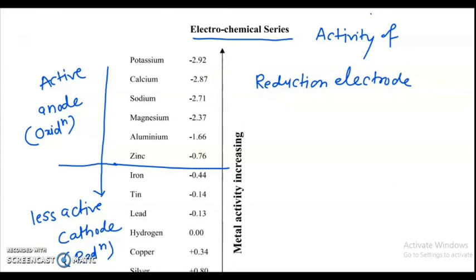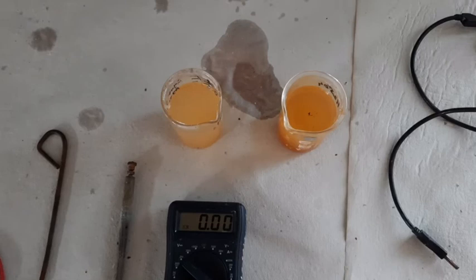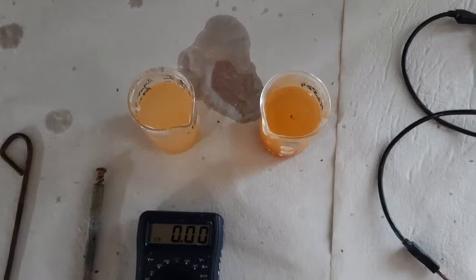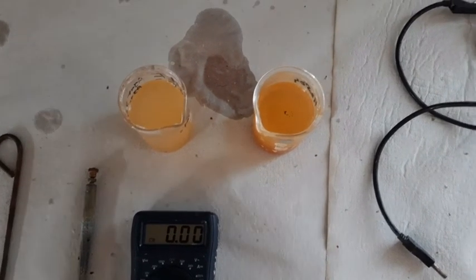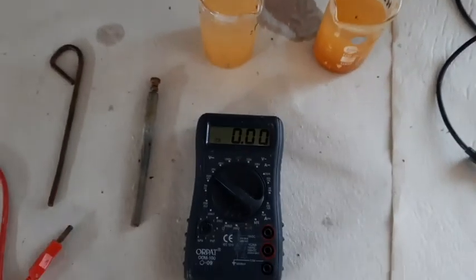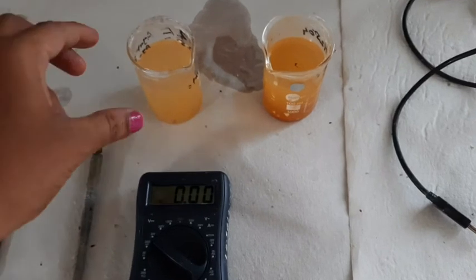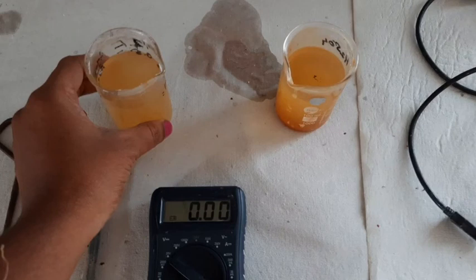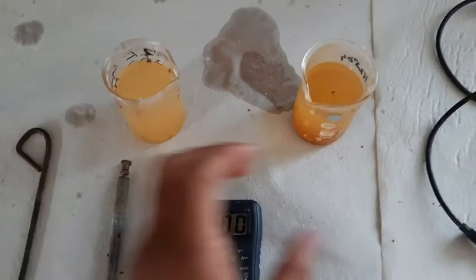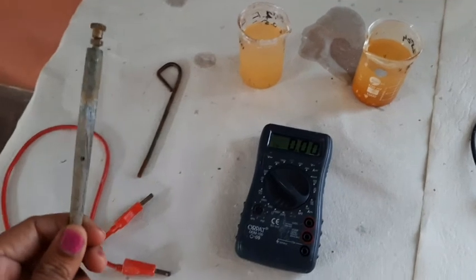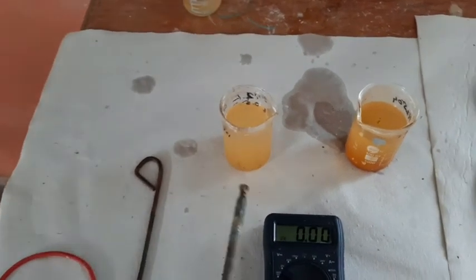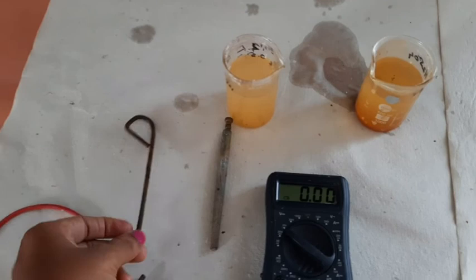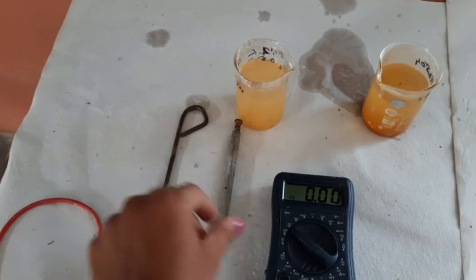Now we are going to see the practical procedure of this experiment. Resources required: a 100 ml beaker containing 1 molar zinc sulfate solution, a 1 molar ferrous sulfate (FeSO₄) solution, a clean zinc rod polished with polish paper, an iron (Fe) rod, and a zinc (Zn) rod.